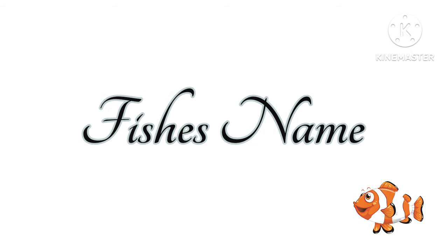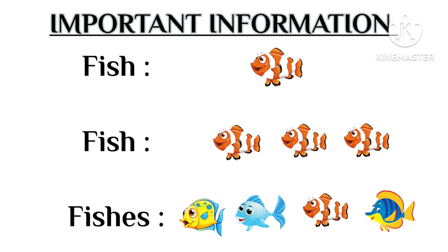If you have one fish, then you call it 'fish.' If you have multiple fish in the same category, you also call it 'fish' — one fish, two fish. When referring to different categories, you call it 'fishes.' Otherwise, in plural number for one category, they call it 'fish.'